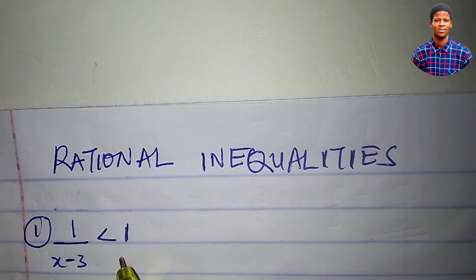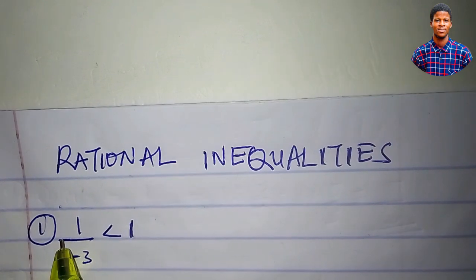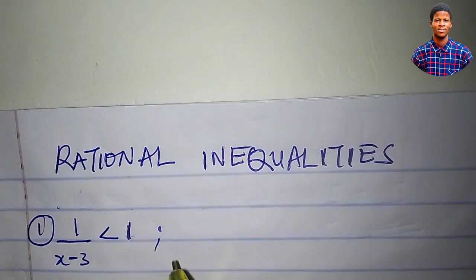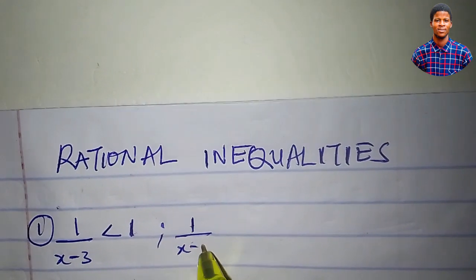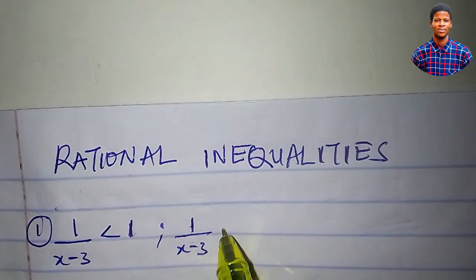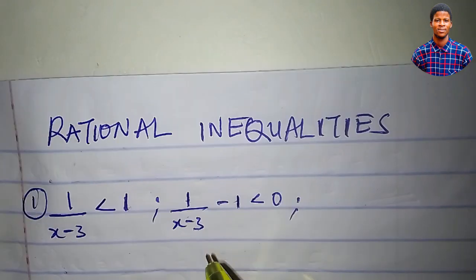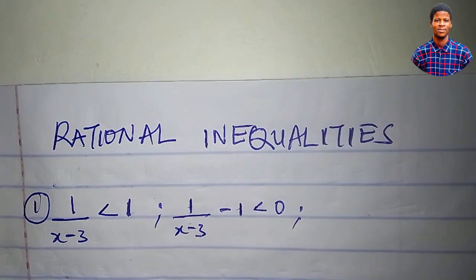The first thing I will do here is to make one of the sides 0. I'm going to take this 1 to the other side so that the right-hand side becomes 0. Doing that, we'll have 1 over x minus 3, minus 1, is less than 0. Let's simplify this left-hand side.